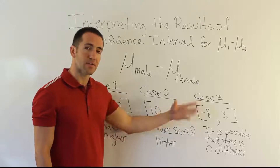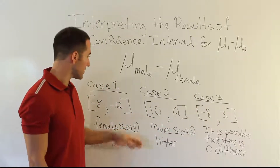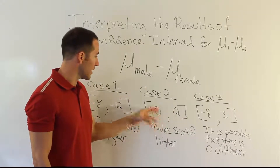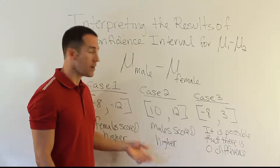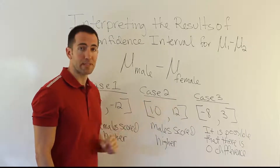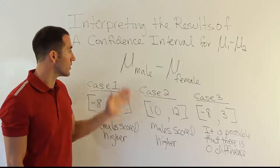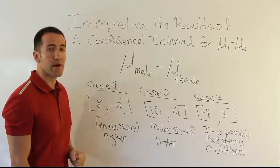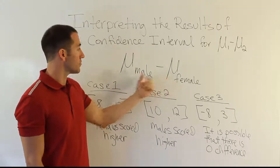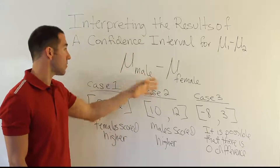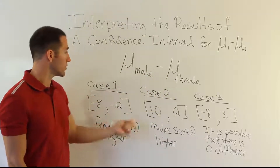We make the interpretation based on the sign of the interval, and the magnitude of the difference is something we talk about afterwards. Both positive: males scored higher — somewhere between 10 and 12 points higher. Hopefully that makes sense, because we're going to use this a lot throughout the course. It's very important that when you see an interval formed by subtracting two population means, you're able to interpret the outcome.